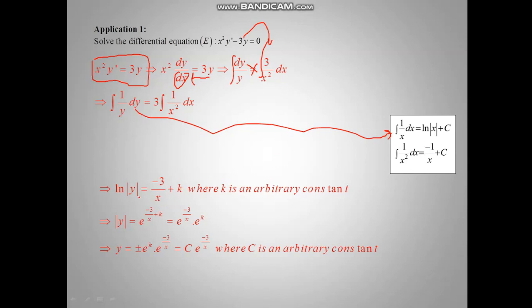We get ln of absolute value of y equal minus 3 over x plus k. To find y, we compose by e. Since e and logarithm are inverse functions, they eliminate each other, giving absolute value of y equal e to the power minus 3 over x times e to the k. Replacing the constant e to the k with c, the general solution is y equal c e to the power minus 3 over x, where c is an arbitrary constant.